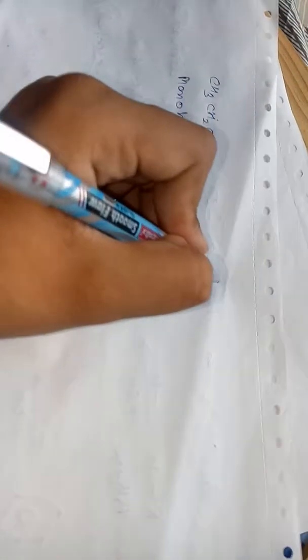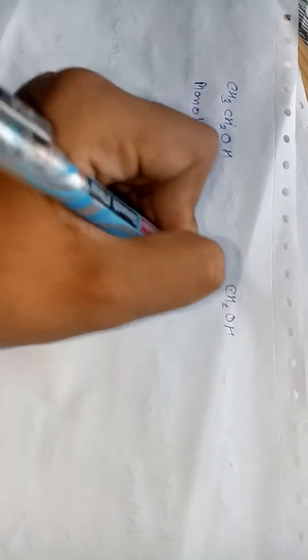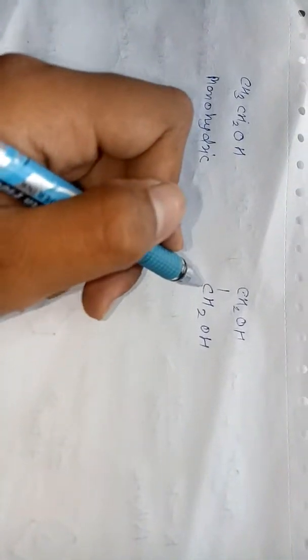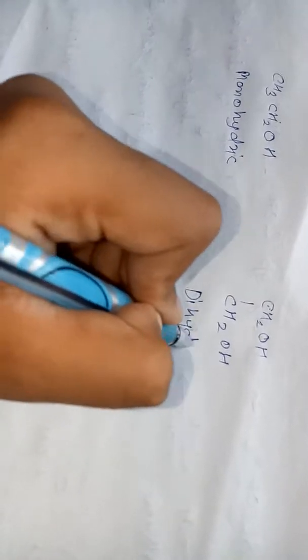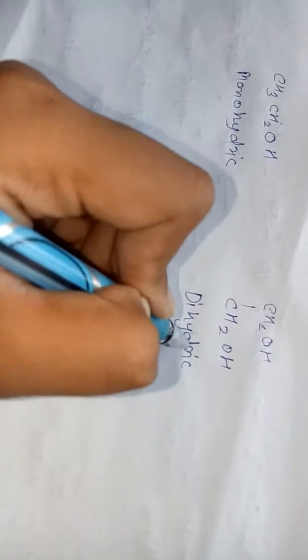The dihydric alcohol has two OH groups — one OH on each separate carbon. The monohydric example CH3CH2OH is called ethyl alcohol.